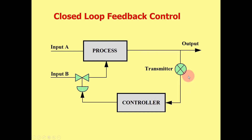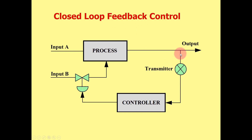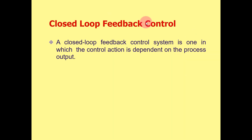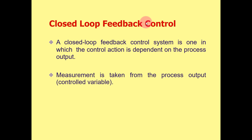There is an instrument that measures the process and feeds the signal back to the controller — this is called closed loop. Feedback means the measurement device measures at the process output, and this is called feedback control. A closed loop feedback control system is one in which the control action is dependent on the process output, and measurement is taken from the process output.